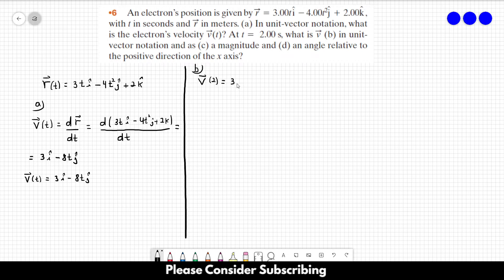So this is 3i minus 8 times 2, because now t is equal to 2. So this is equal to 3 in the i direction, minus 16 in the j direction. Don't forget to include the unit, meters per second. So this is the answer of letter b.